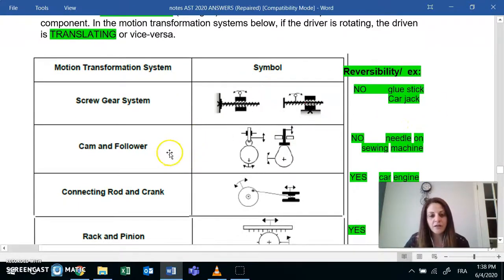The next is a cam follower, one of my personal favorites. This one here, we have a strangely shaped cam. The bottom here is the cam. And depending on the shape, the follower on top will follow the cam. It is not reversible, and you'll see why in the video. An example for that is a needle on a sewing machine.